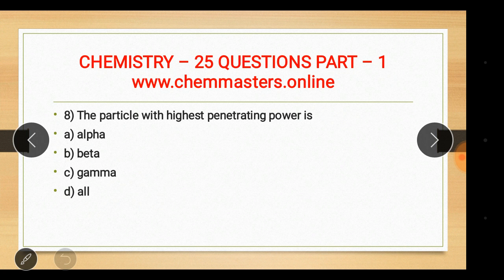Question eight: the particle with the highest penetrating power is the gamma ray. Gamma particles are electrically neutral, which is why they have the highest penetrating power compared to alpha and beta particles.